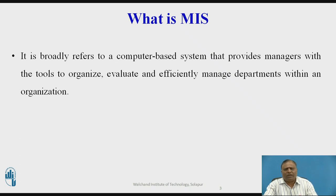Now we are going to see the definition of Management Information System. What is MIS? A management system is the framework of policies, processes, and procedures used by an organization to ensure that it can fulfill all the tasks required to achieve its objectives. Management Information System, or MIS, broadly refers to a computer-based system that provides managers with the tools to organize, evaluate, and efficiently manage departments within an organization.